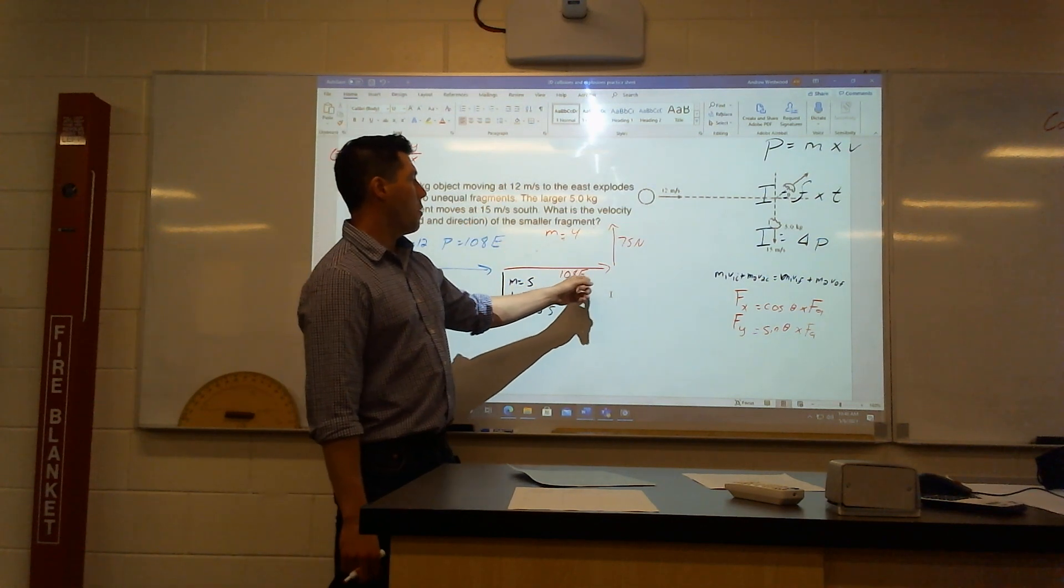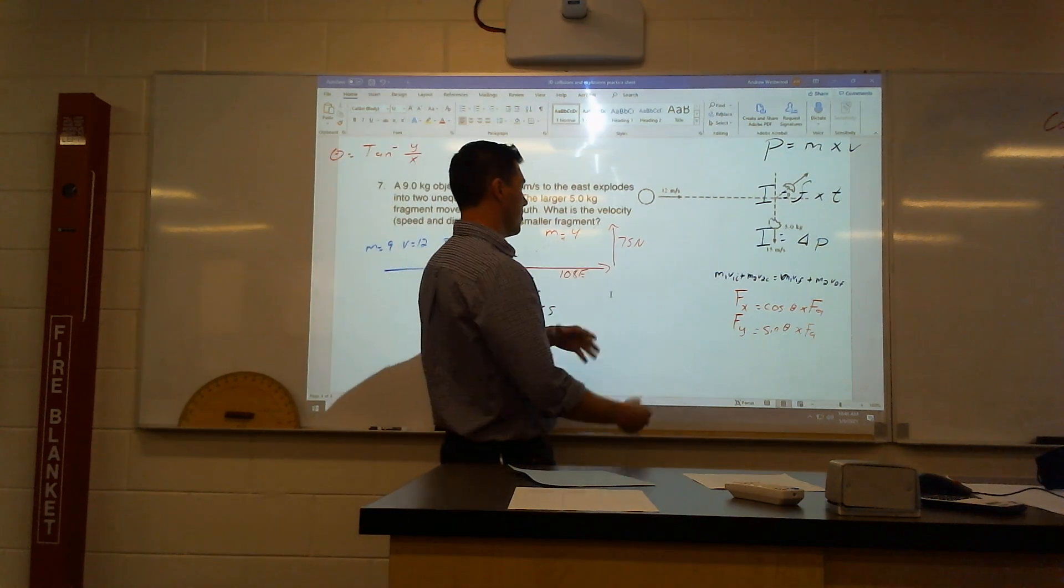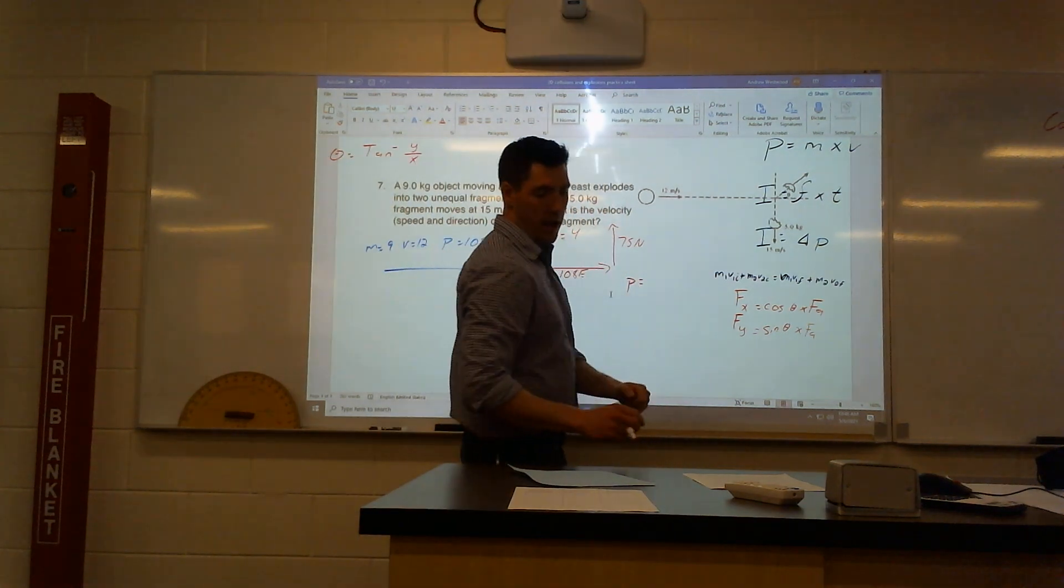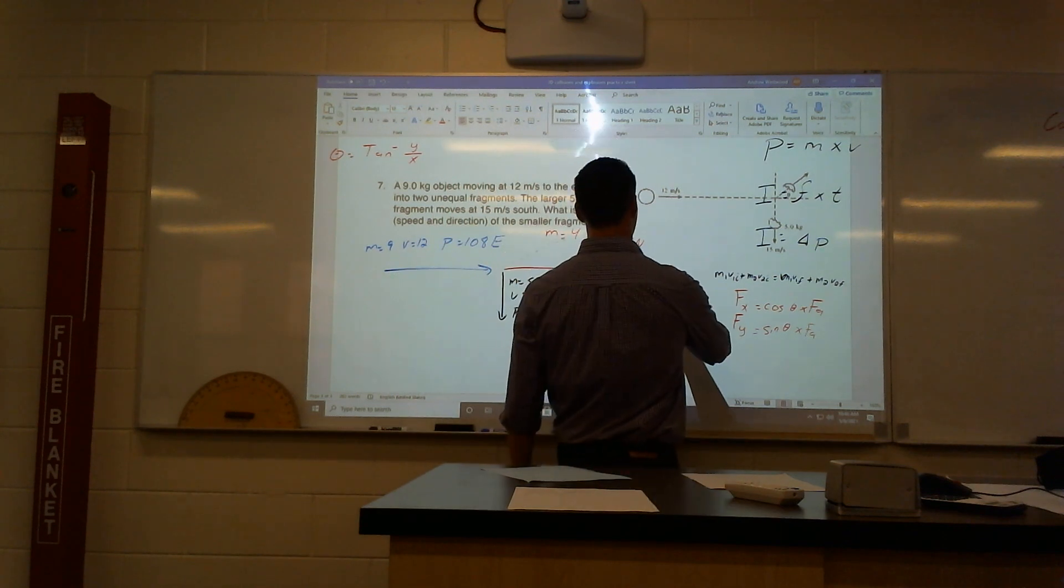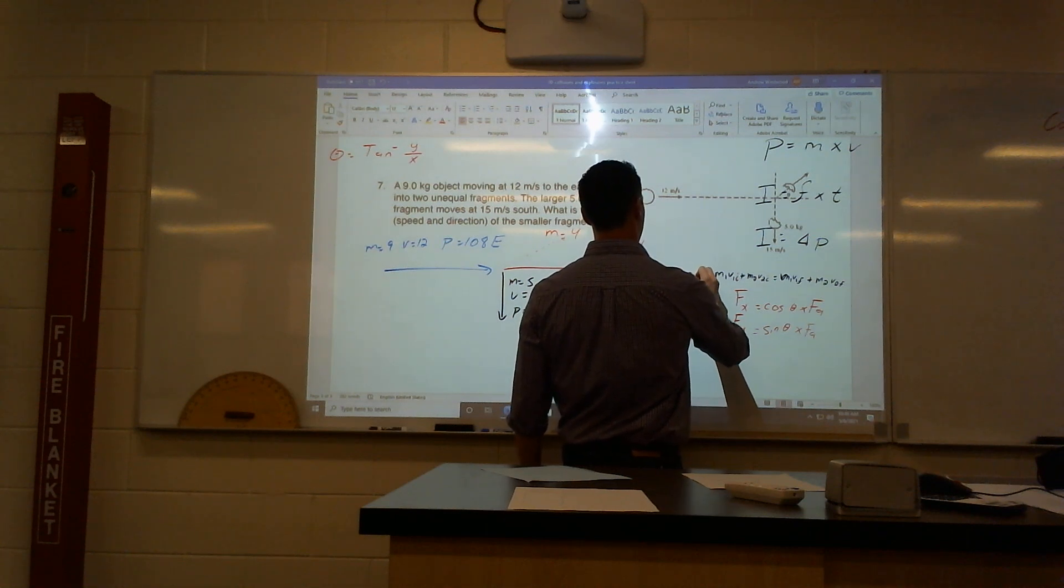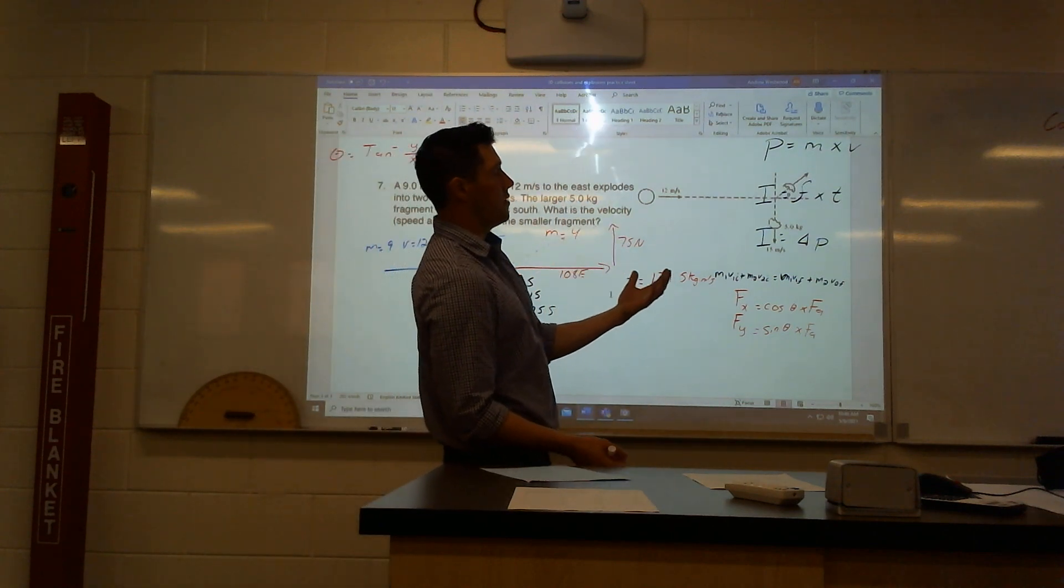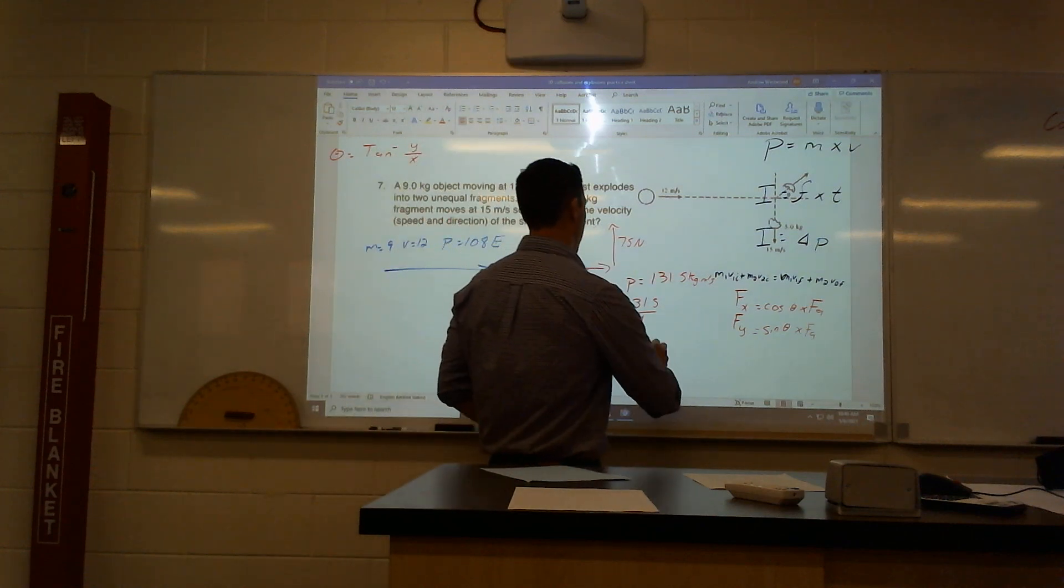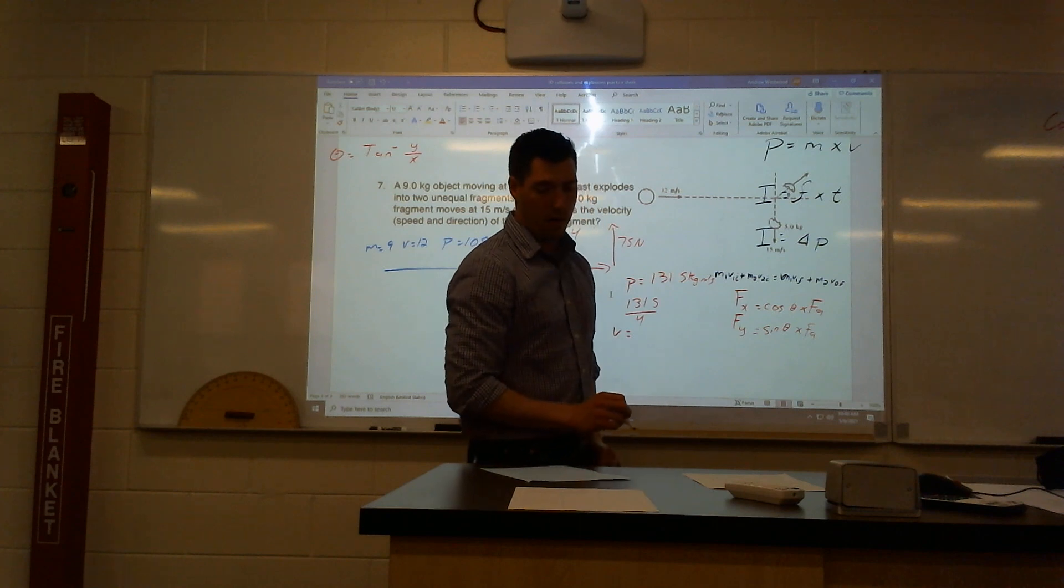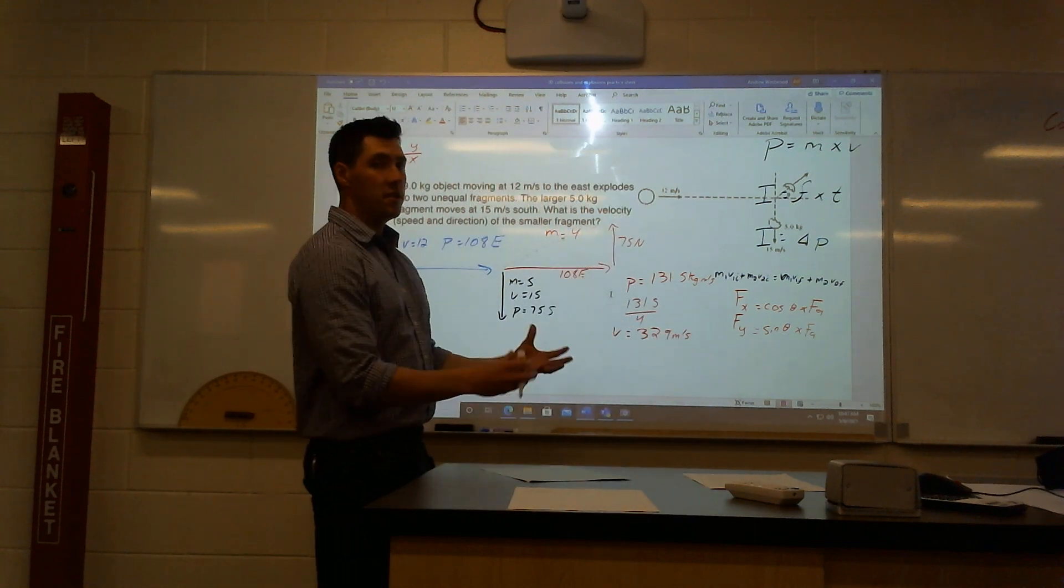Now I know my X, I know my Y, I can figure out what the momentum of this is using those two numbers. A squared plus B squared equals C squared. So my momentum in the end, using the 108 and the 75, will be a momentum of 131.5 kilogram meters per second. Now it's asking for the velocity. What is the velocity of the small fragment? The nice thing is I just have to divide by the mass to get the velocity. So 131.5 divided by 4, that's the mass that's left. It gives me a velocity of 32.9 meters per second.